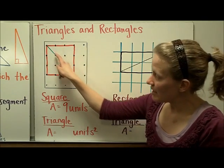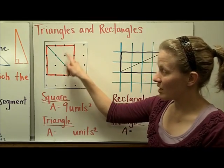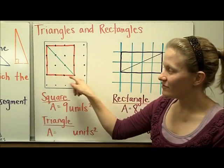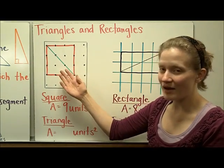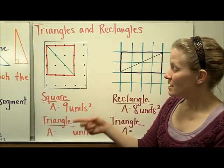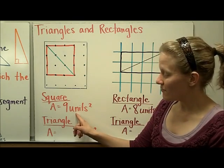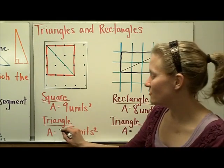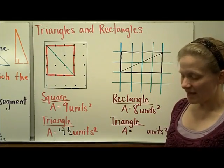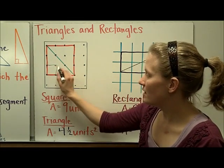If we take another rubber band and cut that square in half, we've now formed two triangles that are equal. The area of the triangle, if it cuts that square in half, is going to be half of what the square was. So if the square had an area of nine square units, then half of nine is four and a half. And if we wanted to double check that, we could count them.